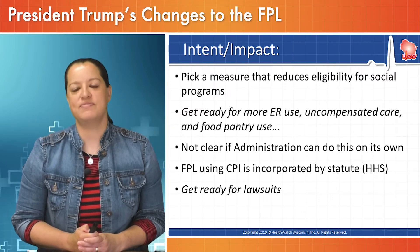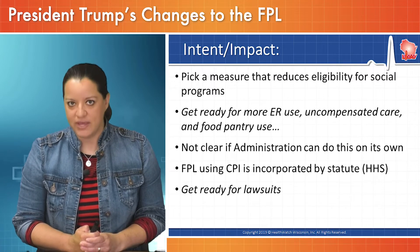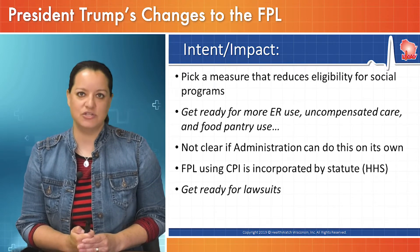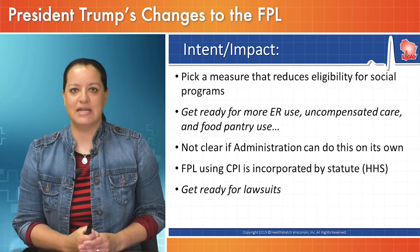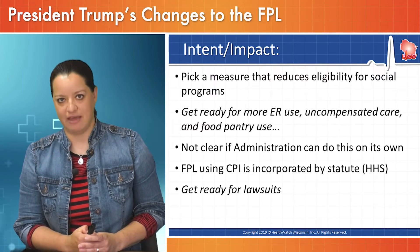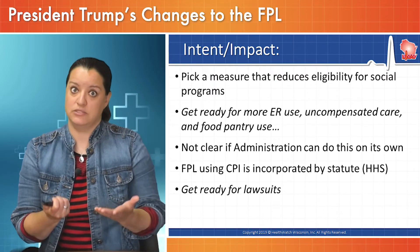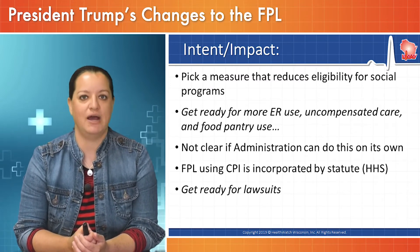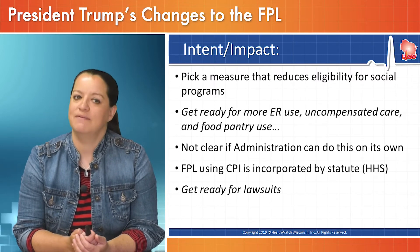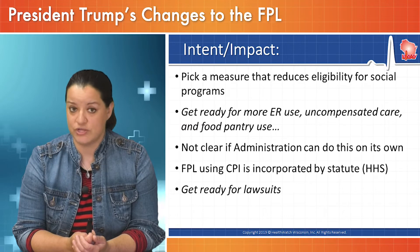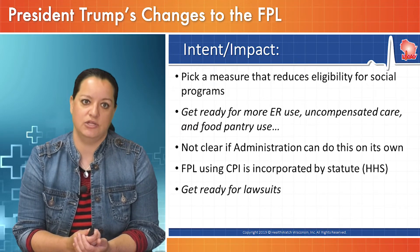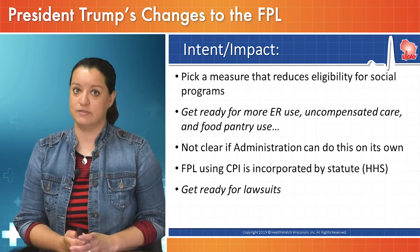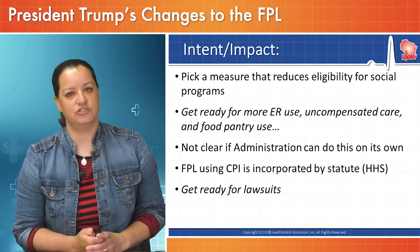It's not clear the administration can do this on its own. The way the federal poverty level is calculated — at least for Medicaid eligibility purposes — is hard-coded into statute. The Department of Health and Human Services doesn't simply choose which index to use; the law says to use the Consumer Price Index when determining annual federal poverty level eligibility for programs. So if this request for comment turns into a rule, litigation will likely follow. Using a more frequent evaluation via the Chained CPI could also be logistically impossible.